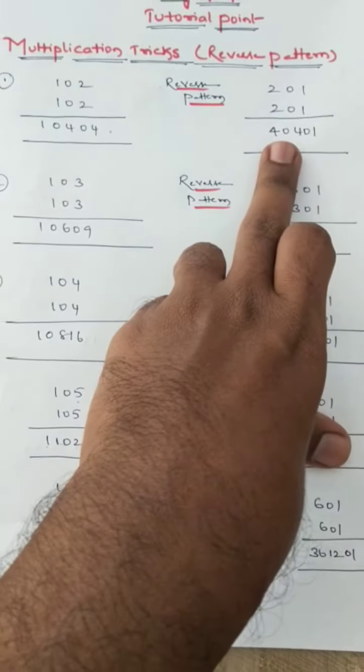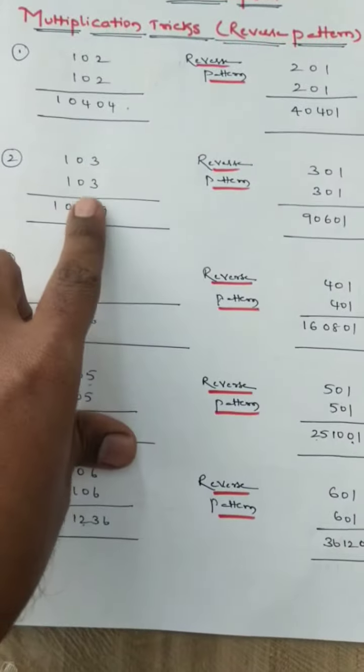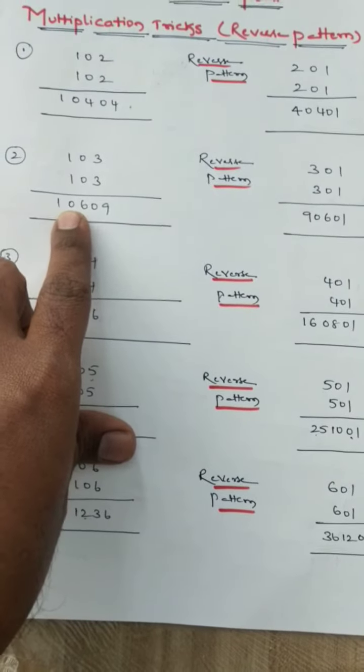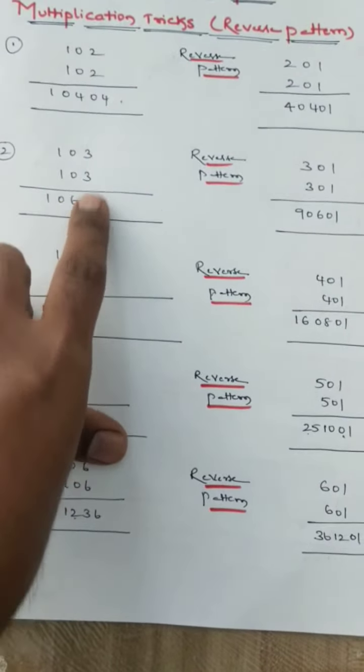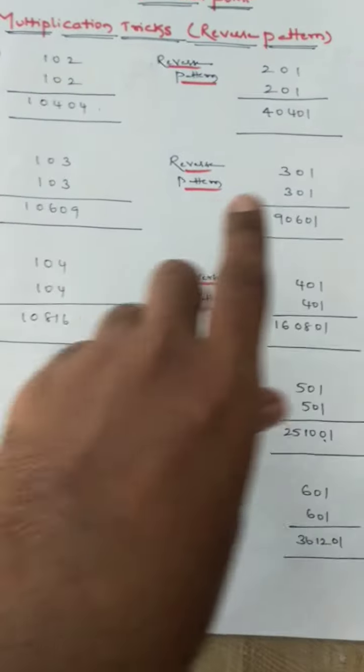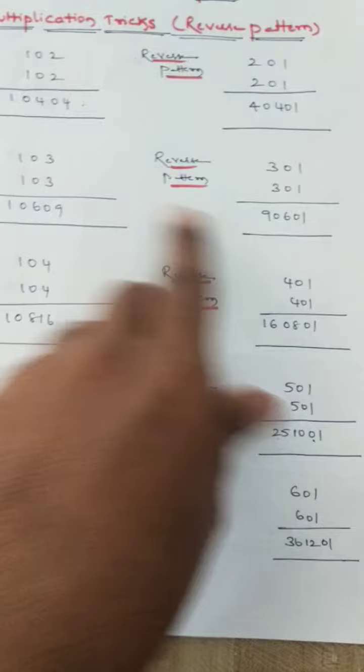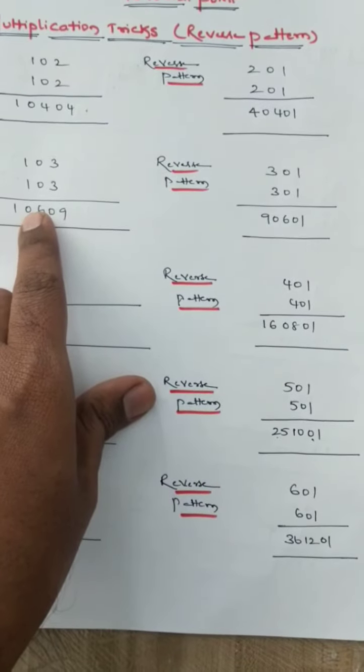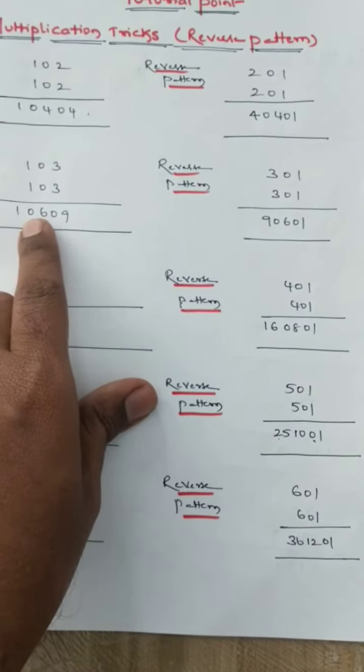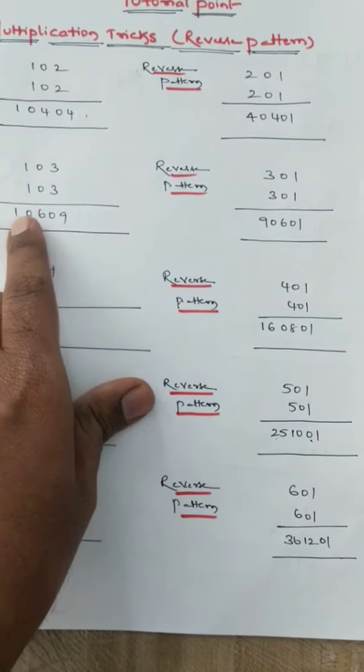103 into 103, you get 10 as it is, 3 plus 3 is 6, 3 into 3 is 9. 301 to 301, you will get 9, 0, 6, 0, 1.